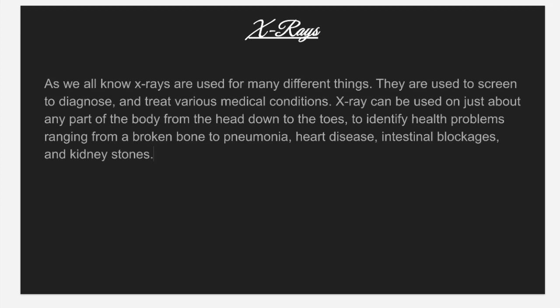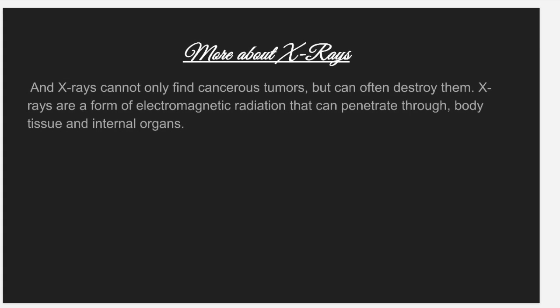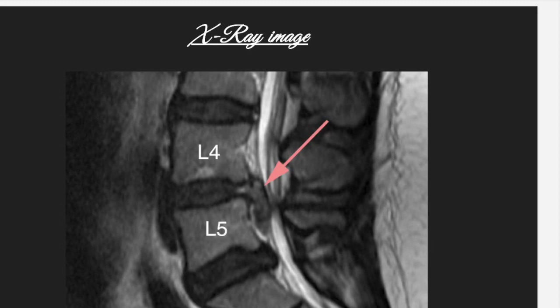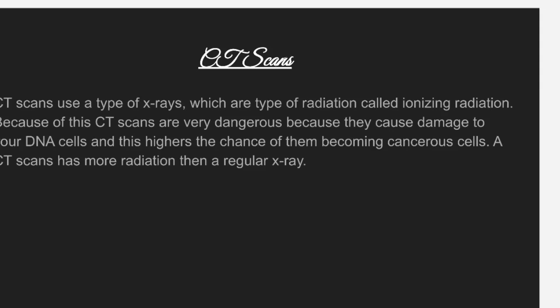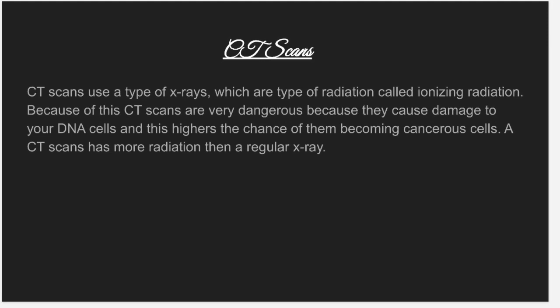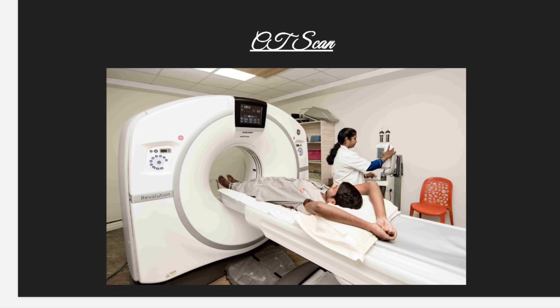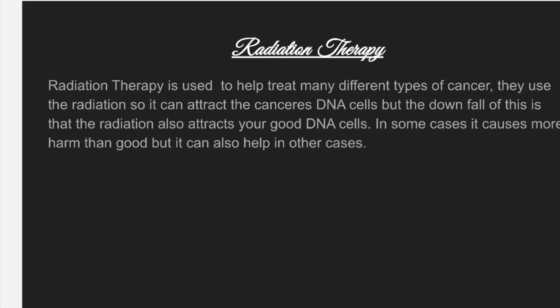More about X-rays. An X-ray cannot only find cancerous tumors, but can often destroy them. X-rays are a form of electromagnetic radiation that can penetrate through body tissue and internal organs. CT scans use a different type of X-ray, which is a type of radiation called ionizing radiation. CT scans are very dangerous because they cause damage to your DNA cells, and this raises the chance of them becoming cancerous cells. A CT scan has more radiation than a regular X-ray.